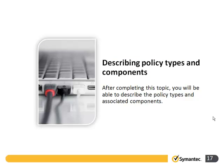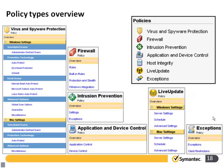Let's look at the policy types and components. We can see all the different policy types available and areas we can manage within them. Virus and spyware protection enables us to check each file and process running for viruses and spyware. We also have email scan capability and use auto-protect to constantly scan files for potential problems. We can install download protection and SONAR configuration. Note that MAC settings are also available within the virus and spyware protection.